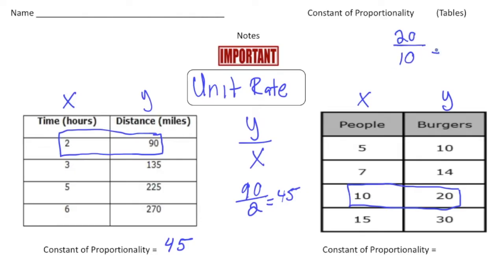When I reduce 20 over 10 we get 2, and that right there is the unit rate. So the constant of proportionality is 2. Now that you understand how to get the constant of proportionality from tables, pause the video and try the 'your turn' problem. When you're done, hit play and you can see how you did. Good luck!